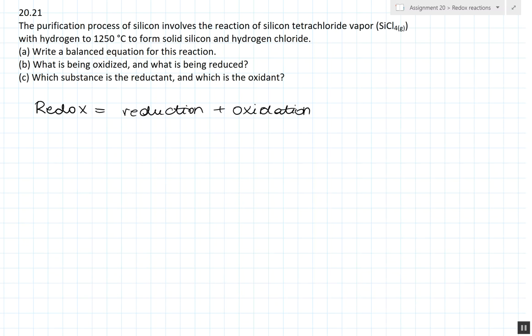Today, I would like to solve the following assignment regarding redox reactions. The purification process of silicon involves the reaction of silicon tetrachloride vapor (SiCl4) with hydrogen to 1250 degrees Celsius to form solid silicon and hydrogen chloride. A. Write a balanced equation for this reaction.